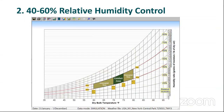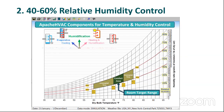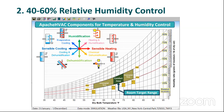Number two is relative humidity. ASHRAE has published documentation stating the most unfavorable survival for microorganisms is when relative humidity is between 40 and 60%. Here I'm showing the room target range. The IES Apache HVAC application has a range of components to control both temperature and humidity for any given space.